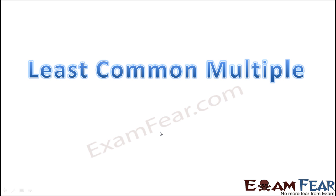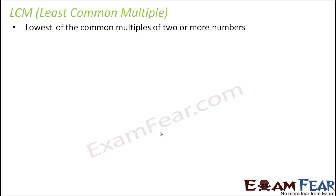Here we will first find out common multiples between two or more numbers and then we will try to find out the minimum value amongst those common multiples. What exactly is least common multiple? Lowest of the common multiples of two or more numbers. Now, let us take an example to understand this better.